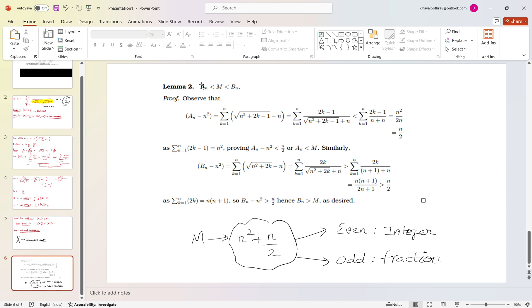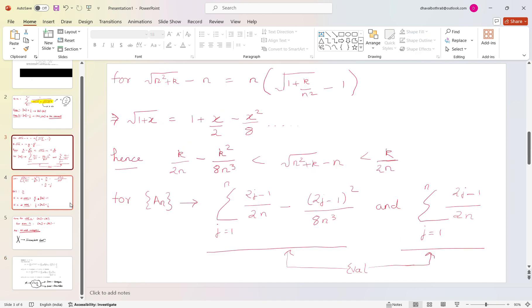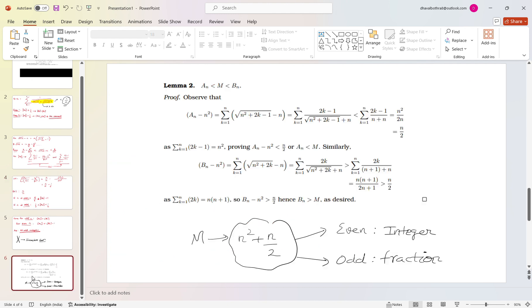So they concluded that a_n is less than this m thing. Also for b_n, which I had not done, I was just fixated for a_n throughout this time. So for b_n they proved that b_n is greater than m. So they have found a value which is between a_n and b_n.